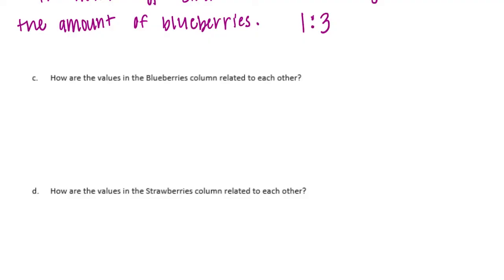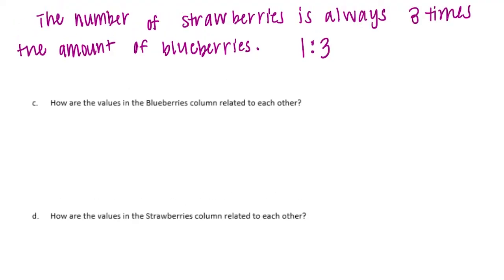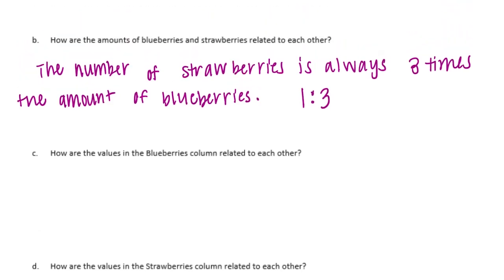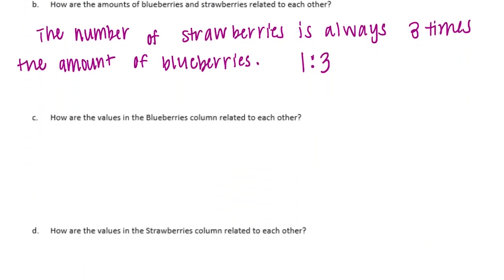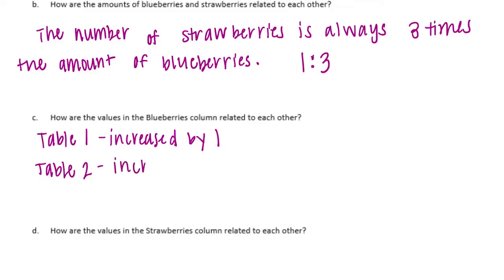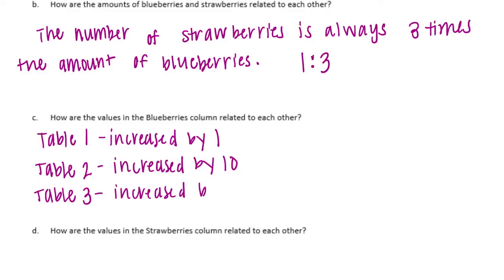Part C: How are the values in the blueberries column related to each other? This varies based on what you put in your chart. In Table 1 we were always increasing by 1. In Table 2 we increased by 10. In Table 3 we increased by 100.